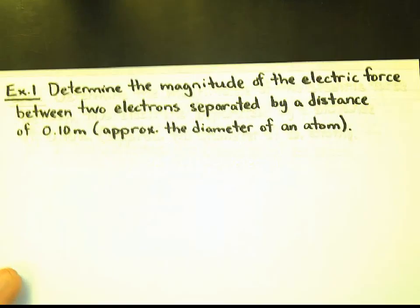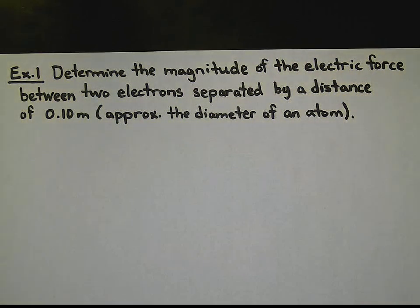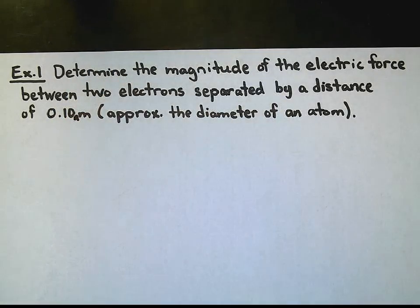The first example I have here is we're going to determine the magnitude of the electric force between two electrons, which are separated by approximately 0.10 nanometers, which is approximately the diameter of an atom.